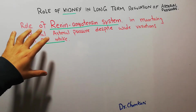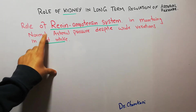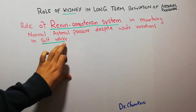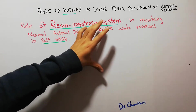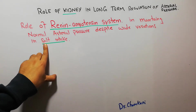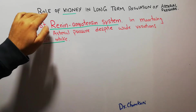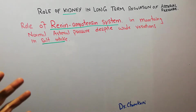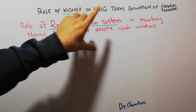Today in this lecture we are going to discuss the role of the renin angiotensin system in maintaining normal arterial pressure despite wide variations in salt intake. How the renin angiotensin system helps a person to increase or decrease the intake of salt and at the same time maintain normal arterial pressure. We are discussing the role of the kidney in long-term regulation of arterial pressure and we have discussed different mechanisms through which the kidney regulates arterial pressure.